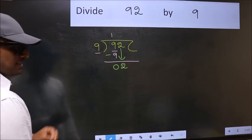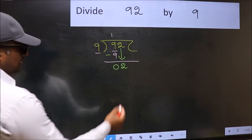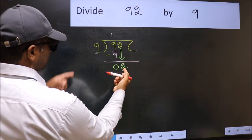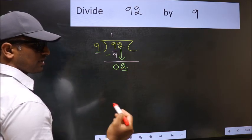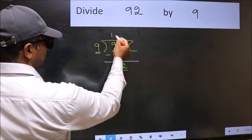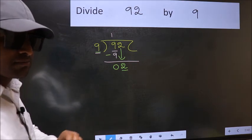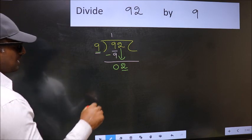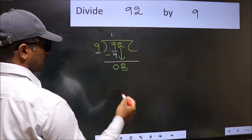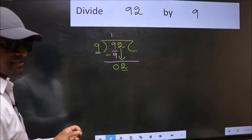After this step, the mistake happens. And the mistake is this. Here we have 2 and here 9. 2 is smaller than 9. So what many do is they directly put dot and take 0. Which is wrong. Why is it wrong? Because just now you brought this number down. And in the same step, you want to put dot and take 0. Which is wrong.